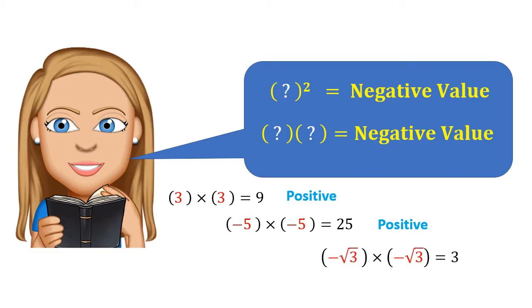Negative root 3 times negative root 3 is 3, positive. Again, it seems like no luck here. Well, we will come back to this later. Don't worry.